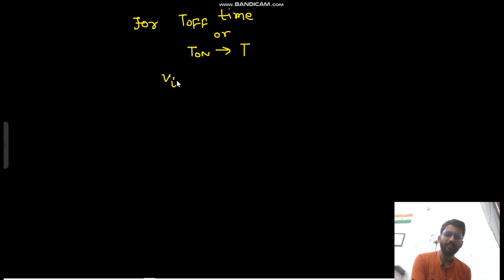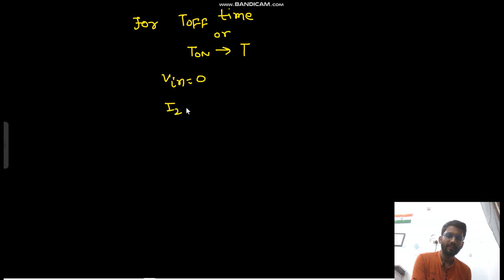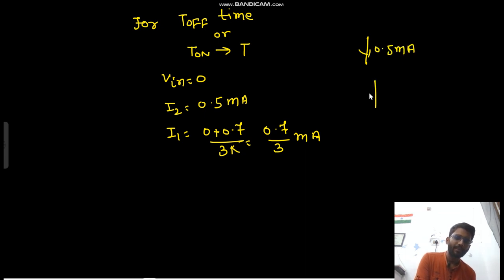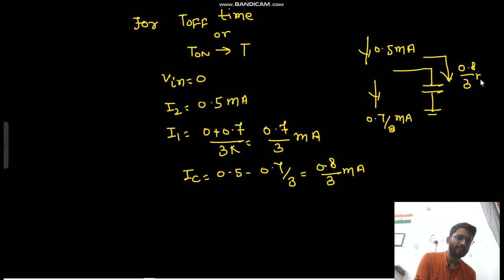From T-on to T time, your Vin would be 0V. So I2 would be the same 0.5 mA. I1 will change to (0 − 0.7) / 3k = −0.7/3 mA. So here you have 0.7/3 mA. The capacitor current IC = 0.5 − 0.7/3 = 0.8/3 mA in the positive direction.